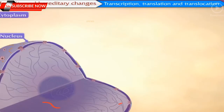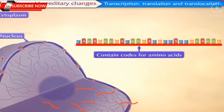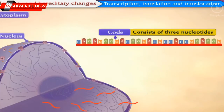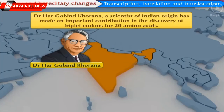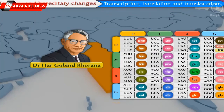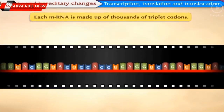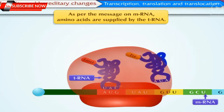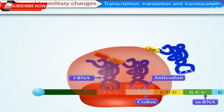The mRNA formed in the nucleus comes into the cytoplasm, bringing the coded message from DNA. This message contains the codes for amino acids. The code for each amino acid consists of three nucleotides, called a triplet codon. Dr. Hargobind Khorana, a scientist of Indian origin, made an important contribution in the discovery of triplet codons for 20 amino acids and was awarded the Nobel Prize in 1968 along with two other scientists. Each mRNA is made up of thousands of triplet codons. As per the message on mRNA, amino acids are supplied by the tRNA. tRNA has anticodons that have a complementary sequence to the codon on mRNA. This process is called translation.